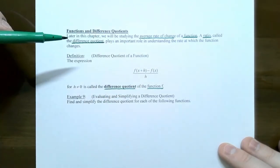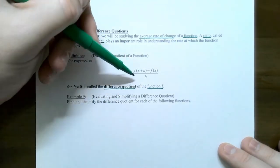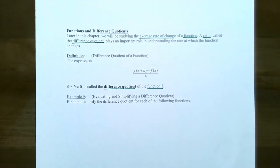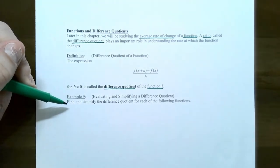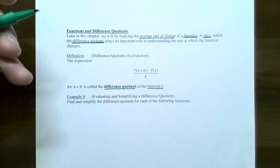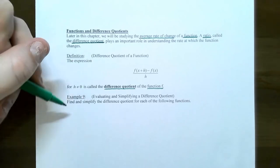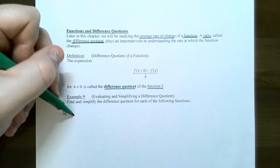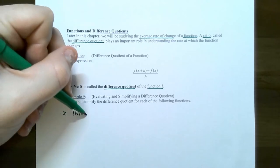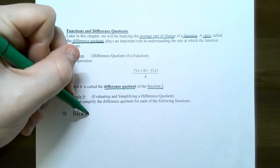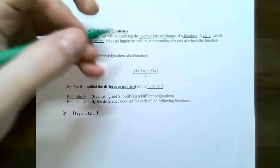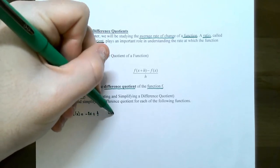Then you divide everything by h at the end. So let's try example nine. We're going to find and simplify completely the difference quotient for a couple of different functions. Number one: let's find the difference quotient for f of x equals negative 3x plus 4. This is a linear function we have seen before.